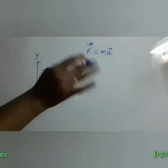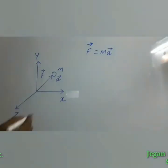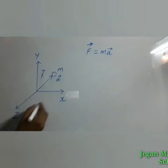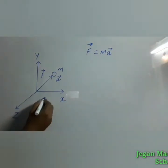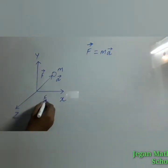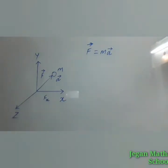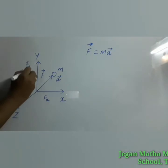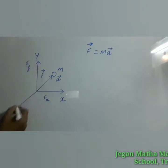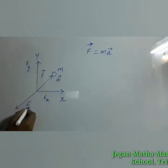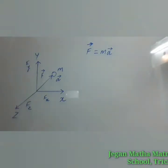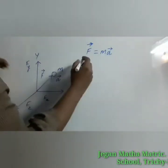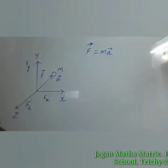These vector quantities can be divided along the axes. So along the x-axis we have the component Fx, along the y-axis we have the component Fy, and along the z-axis Fz. So this F vector can be written in component form.